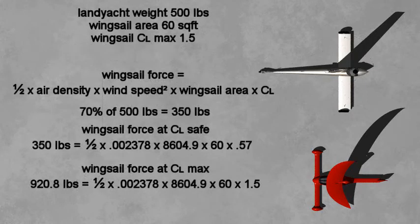Forces on the wind sail can be calculated using air density, wind velocity in feet per second squared, wind sail area, and CL — or airfoil coefficient of lift. The same formula is used for finding the lift of an aircraft's wing. The value of CL is controlled by rotating the wind sail to adjust its angle of attack to the apparent wind. CL safe, in this case, is equal to 0.57, and produces a side force of 350 pounds.